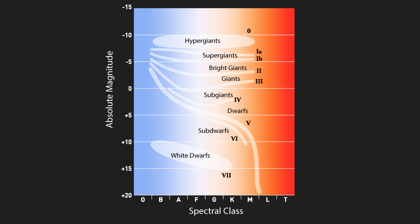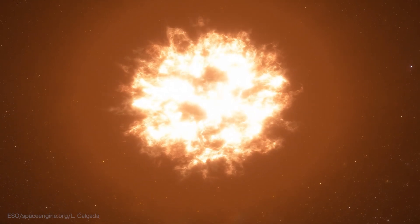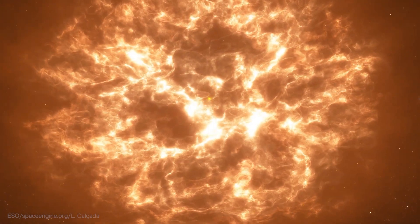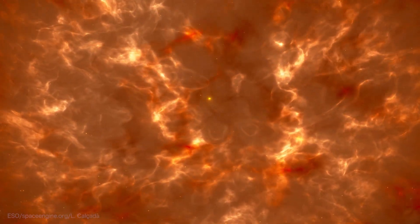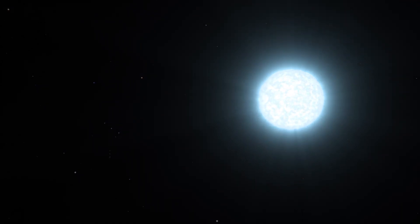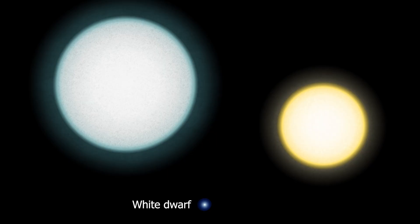A white dwarf star forms after a low mass star — a star that has a mass less than eight times that of our sun — undergoes a supernova. After all of the mass has been ejected and the nuclear fuel has been spent, there remains a hot ball of material that is no longer undergoing nuclear fusion, but is so hot that it still emanates light just from blackbody radiation. We know that there are a lot of white dwarfs out there, but they are hard to see and hard to study. They are small and not particularly bright, and as such, other nearby stars can mask the signal from them.